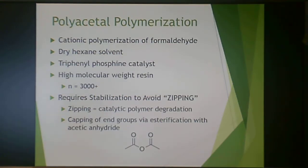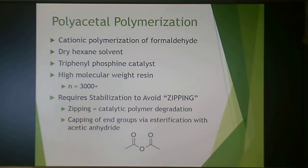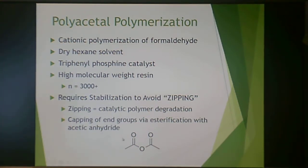Polyacetal is produced by cationic polymerization of formaldehyde in dry hexane solvent using a triphenylphosphine catalyst. It is a very high molecular weight resin with over 3000 repeat units. This requires stabilization to avoid 'zipping,' which is catalytic polymer degradation back to the formaldehyde monomer. To prevent zipping, the chain ends are capped with acetic anhydride.